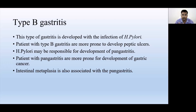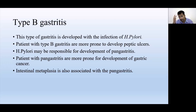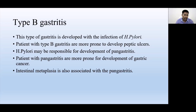When the stomach environment becomes alkaline, the G cells present in the stomach lining start secreting more gastrin, causing more hydrochloric acid to be secreted. This feedback mechanism leads to hypersecretion of gastric acid, causing hyperchlorhydria.